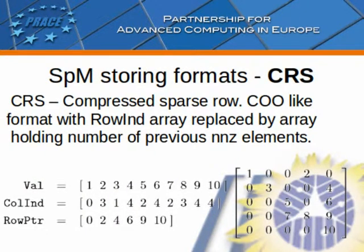CSR stands for Compressed Sparse Row. This format reduces storage overhead of its predecessor by replacing the row index array with a so-called row pointer array, which at the J-th position stores the number of all preceding non-zero elements.